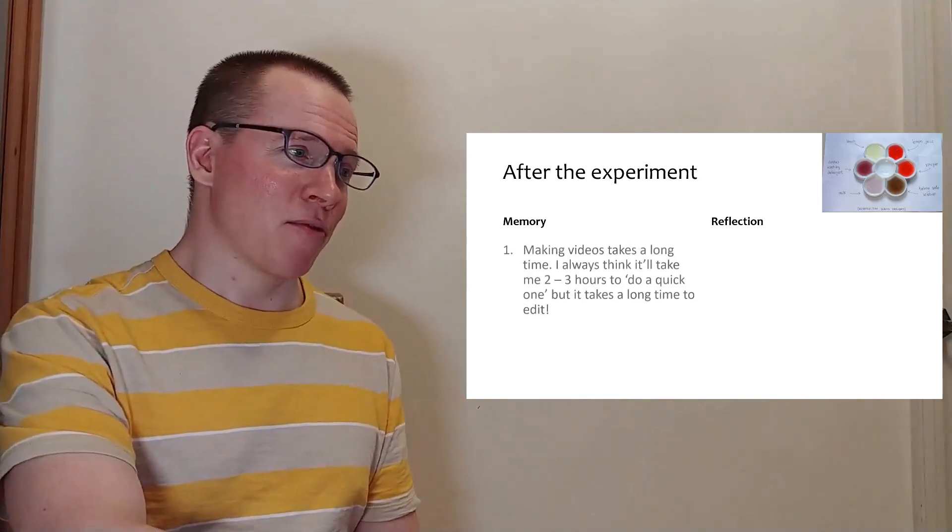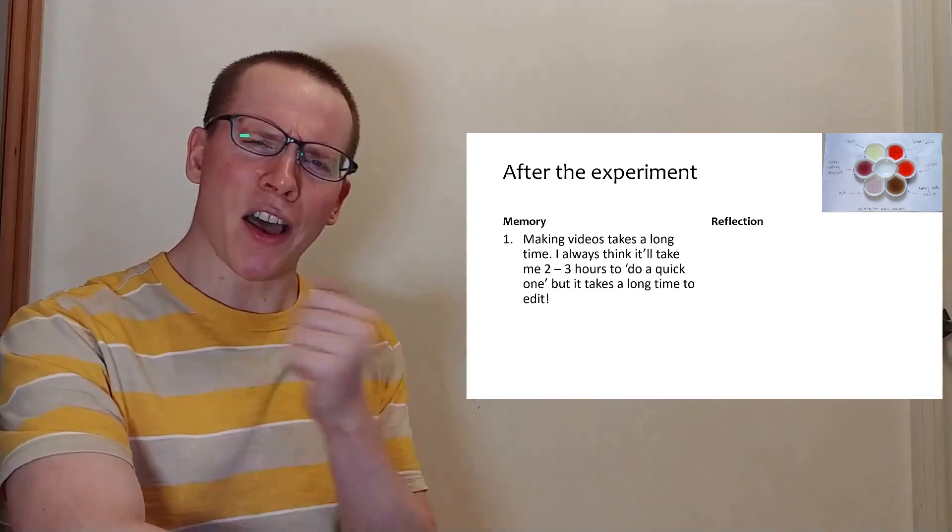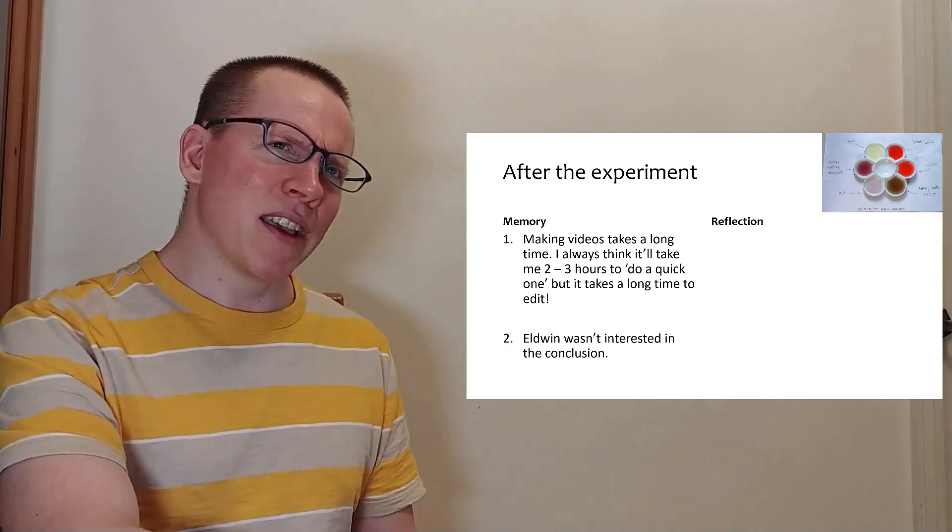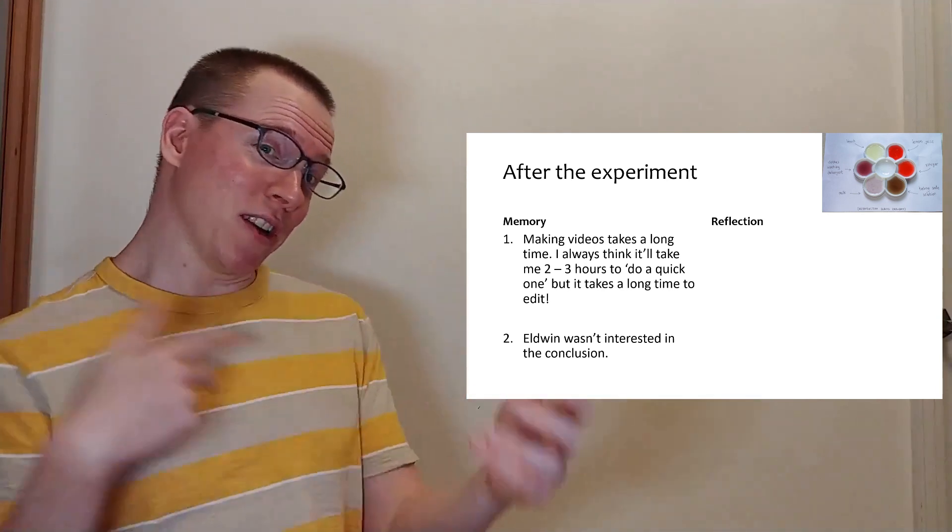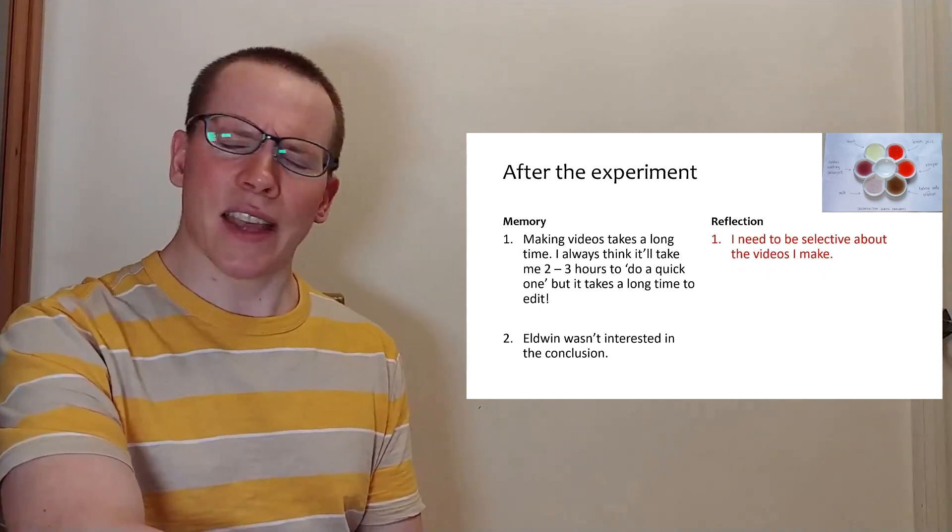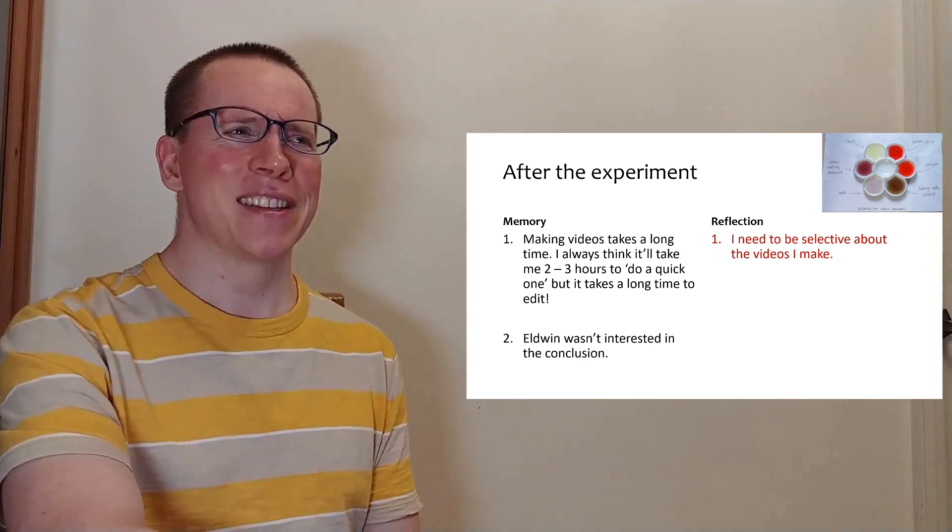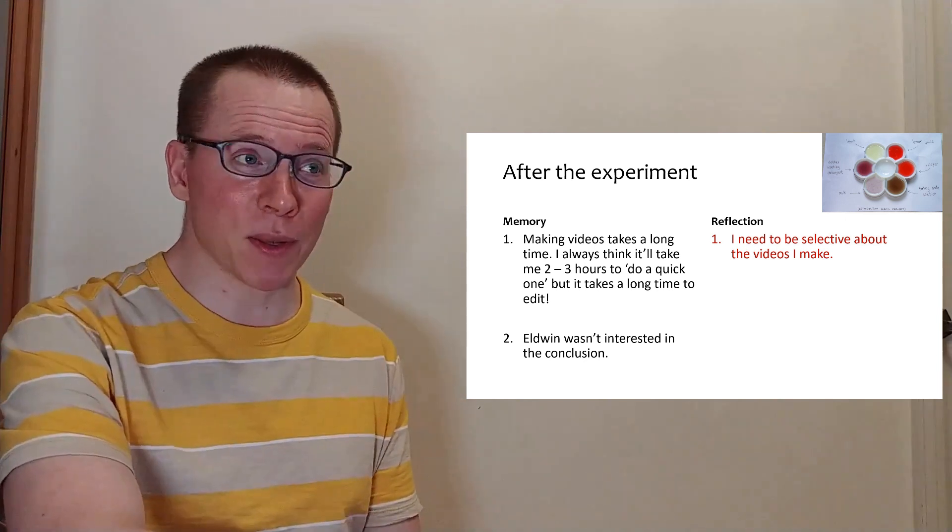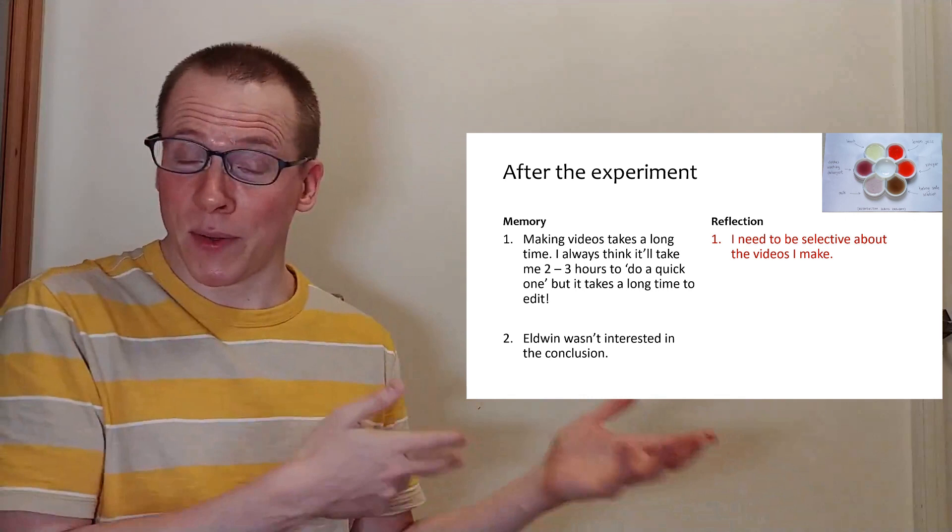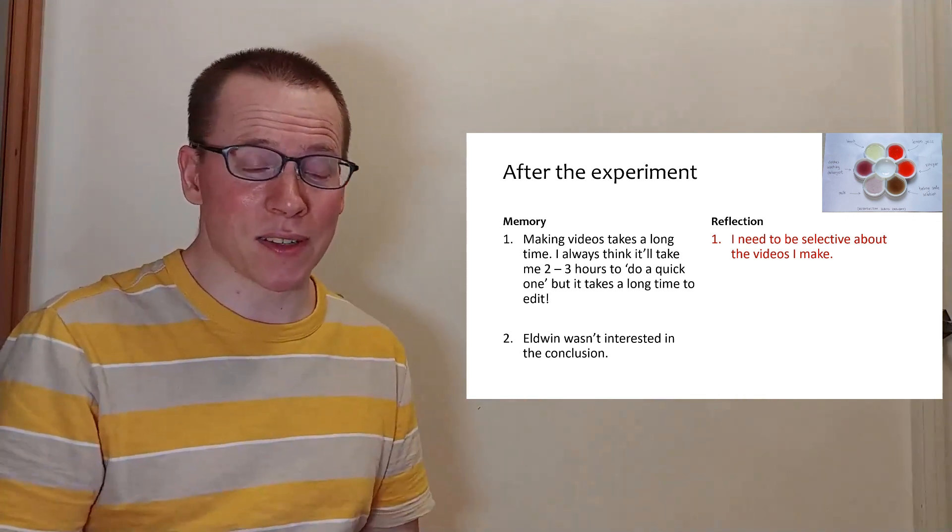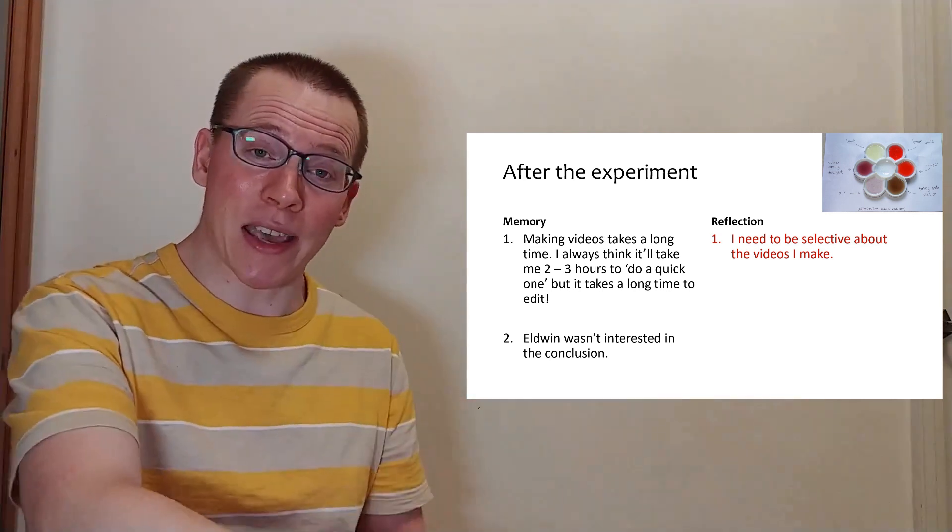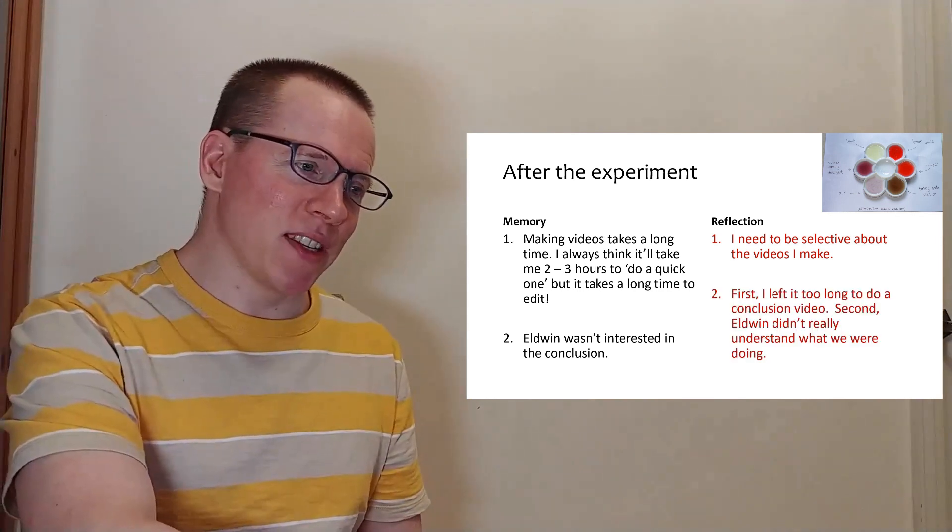After the experiment, I remember that making the videos takes a long time. So I always think to myself, oh, it'll take about two or three hours and I'll do a quick video. And I also try to get Elton to do a bit of this conclusion, this reflection time with me. However, it takes me a long time to do the video. So I need to prioritize which videos are more important to make and which ones are less important. Because otherwise, I'll just end up making videos that are less important, instead of focusing on the more important ones. That's just like a real life thing that I have to accept and make decisions with the time that I have.